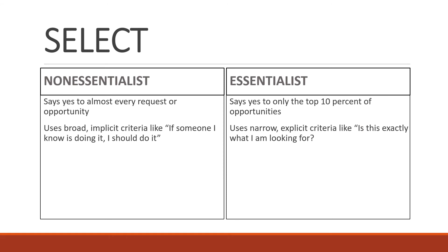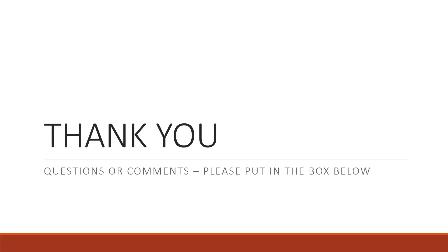A non-essentialist says yes to almost every request or opportunity out of fear of losing it all. The essentialist says yes to only the top 10% of opportunities. A non-essentialist uses broad, implicit criteria like 'if someone I know is doing it, I should do it,' whereas an essentialist uses narrow, explicit criteria like 'is this exactly what I'm looking for?' That sums up everything about Explore.